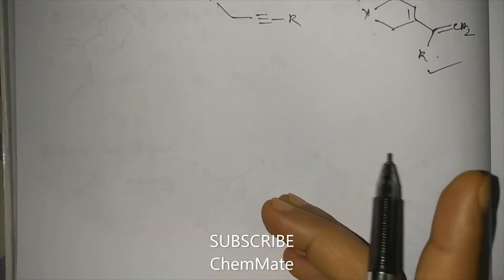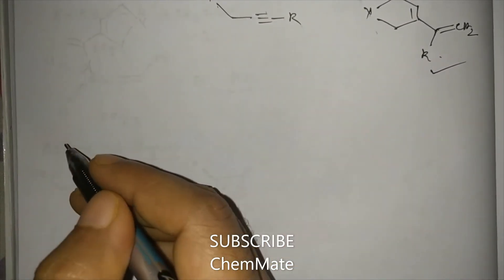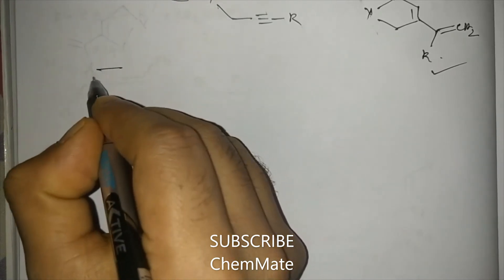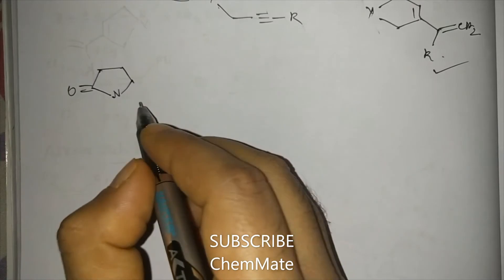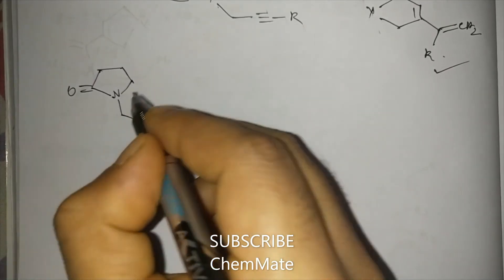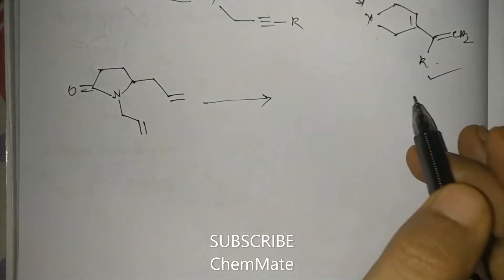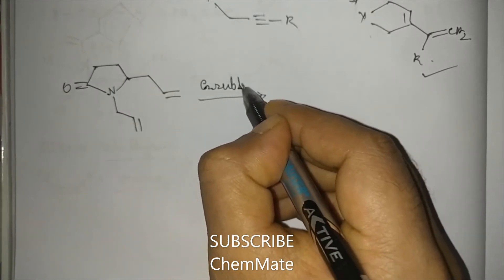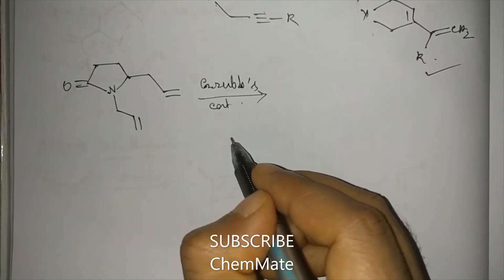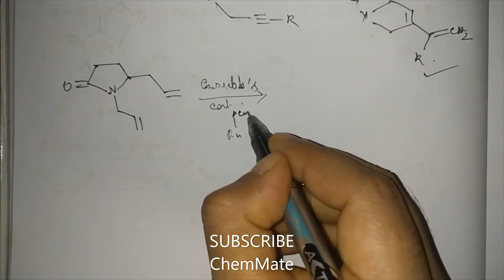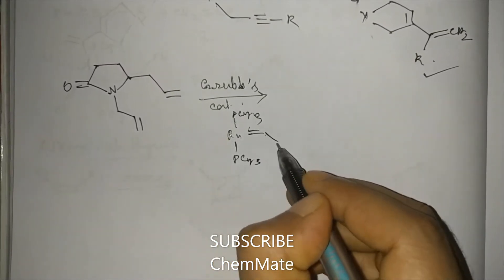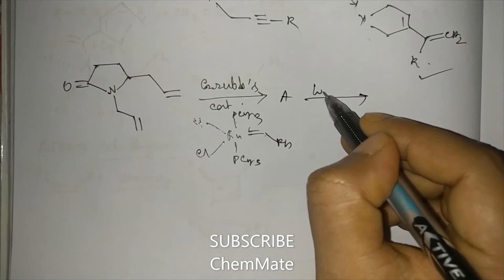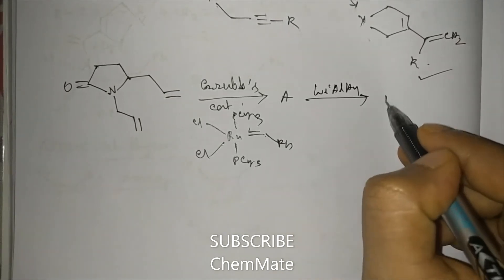Now we will discuss the previous year questions that came in different competitive exams. One question which came in the 2015 December CSIR UGC NET exam was like this: here two allyl groups are connected. This compound is treated with Grubbs catalyst. Product A is formed, and then it is treated with LiAlH4, lithium aluminum hydride, to form product B.